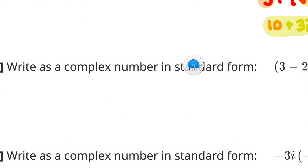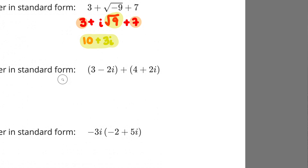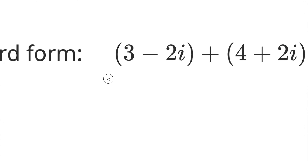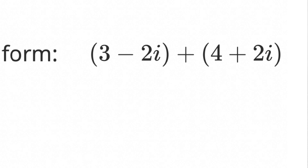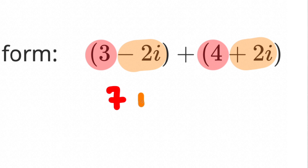The next one says write as a complex number in standard form. Combine the real parts: 3 + 4 = 7. Combine the imaginary parts: -2i + 2i = 0i, which you don't need to write. The final answer is just 7.